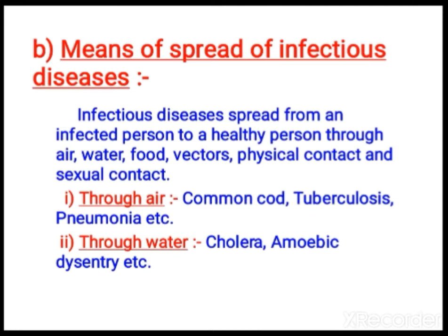Next, through water — cholera, amoebic dysentery, and others spread by means of water. If the water is not safe to drink, unclean, it will carry all disease-causing organisms. That is why you have to take safe drinking water. During rainy season the water gets infected, so we have to boil the water and use filters. Always prefer clean drinking water.